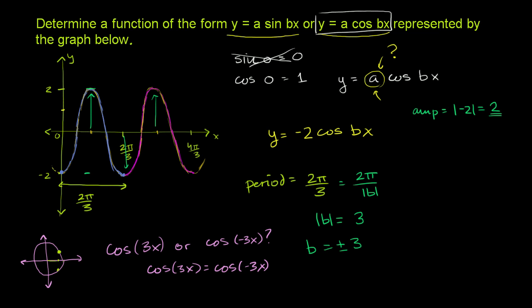So this could be the graph of, and now we get our drum roll, y is equal to negative 2 times the cosine of, no, I said I wouldn't do the negative, the cosine of positive 3x. And we are done. Amen.